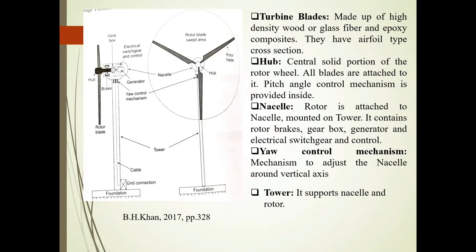Next is nacelle. The rotor is attached to the nacelle, which is mounted on the tower. It contains — as shown in the large view — rotor brakes, gearbox, generator, and electrical switch gear and control. These components are inside the nacelle.